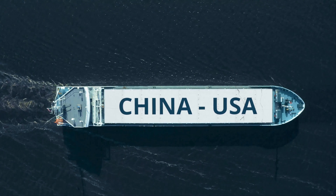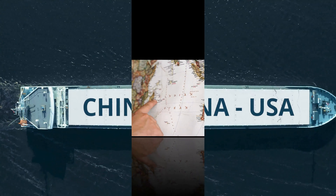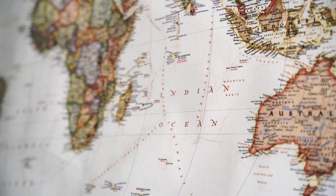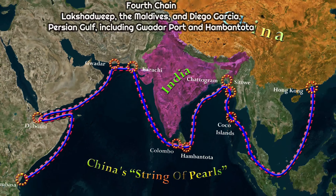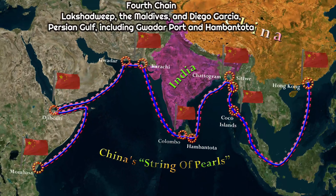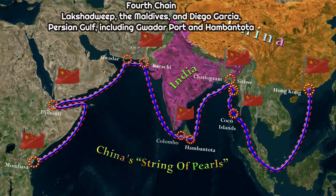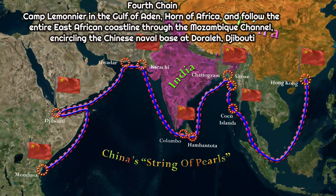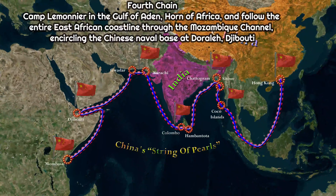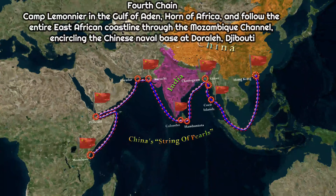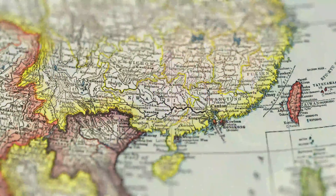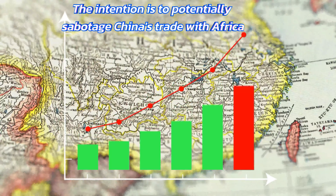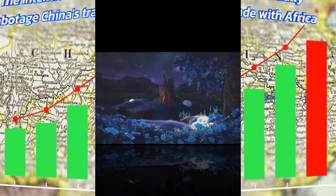Unlike the first three chains located in the Pacific Ocean, proposed new chains extend into the Indian Ocean, reflecting China's increasing interest in the region. The proposed fourth chain would include locations like Lakshadweep, the Maldives, and Diego Garcia, aiming to disrupt China's String of Pearls waypoints towards the Persian Gulf including Gwadar port and Hambantota. The proposed fifth chain would start from Camp Lemonnier in the Gulf of Aden, run around the Horn of Africa, follow the entire East African coastline through the Mozambique Channel, and encircle the Chinese naval base at Djibouti — with the intention of potentially disrupting China's trade with Africa.